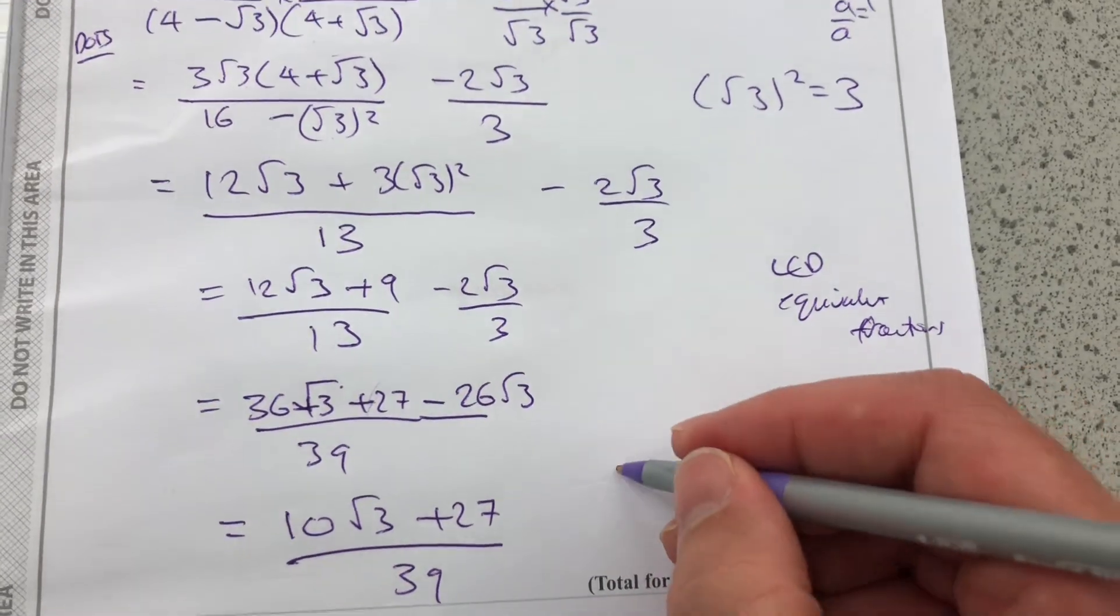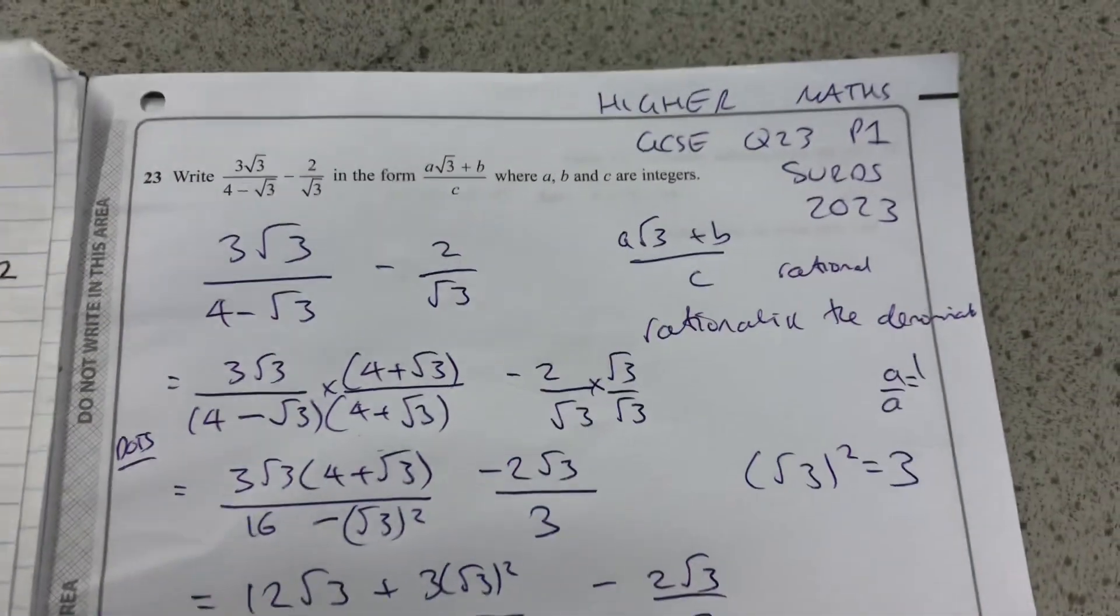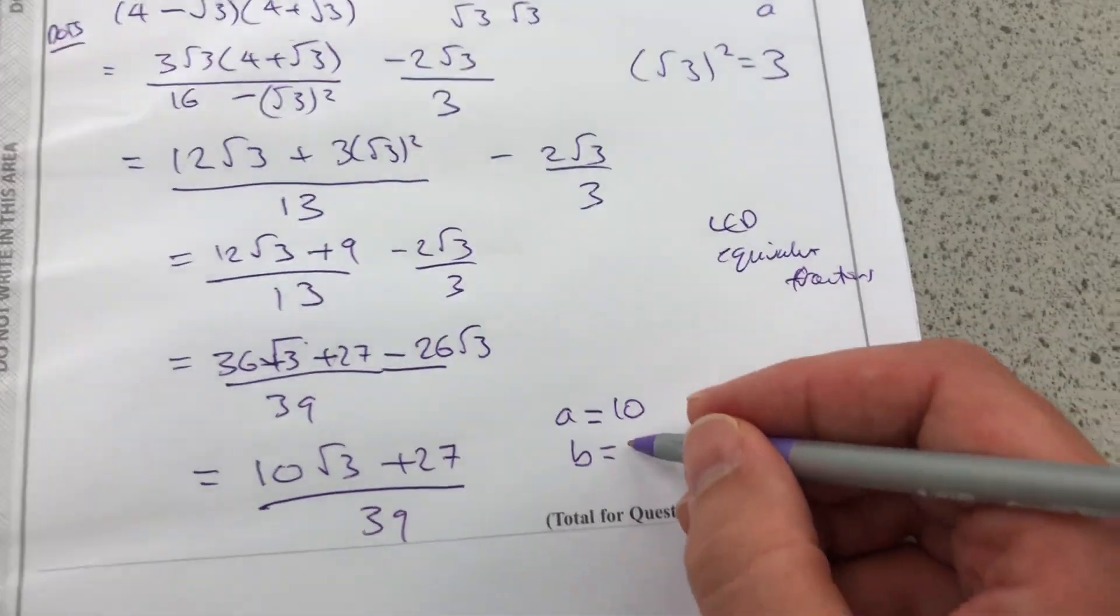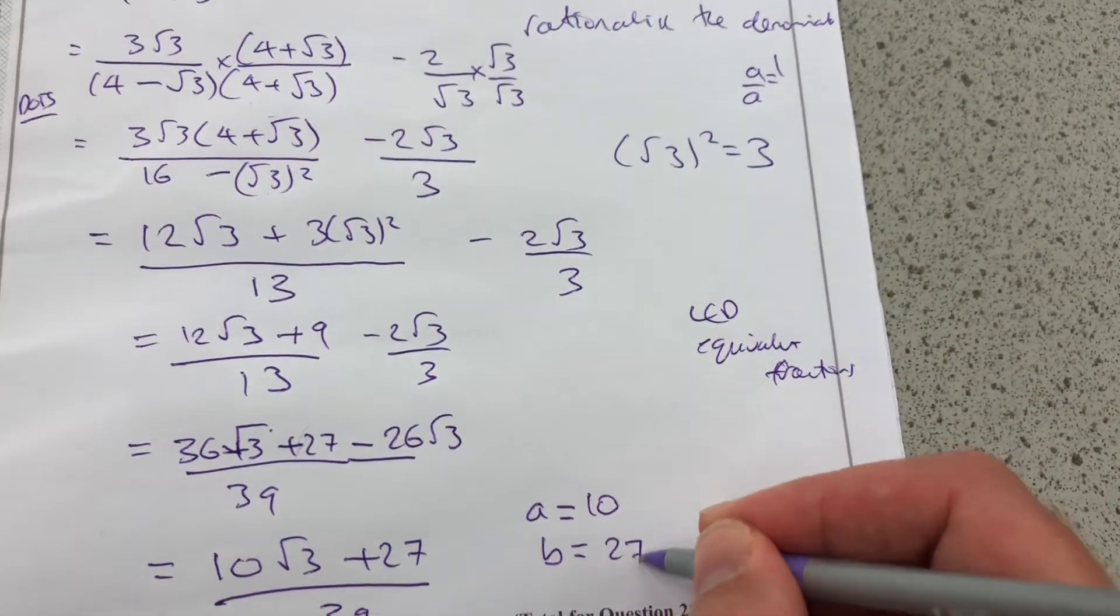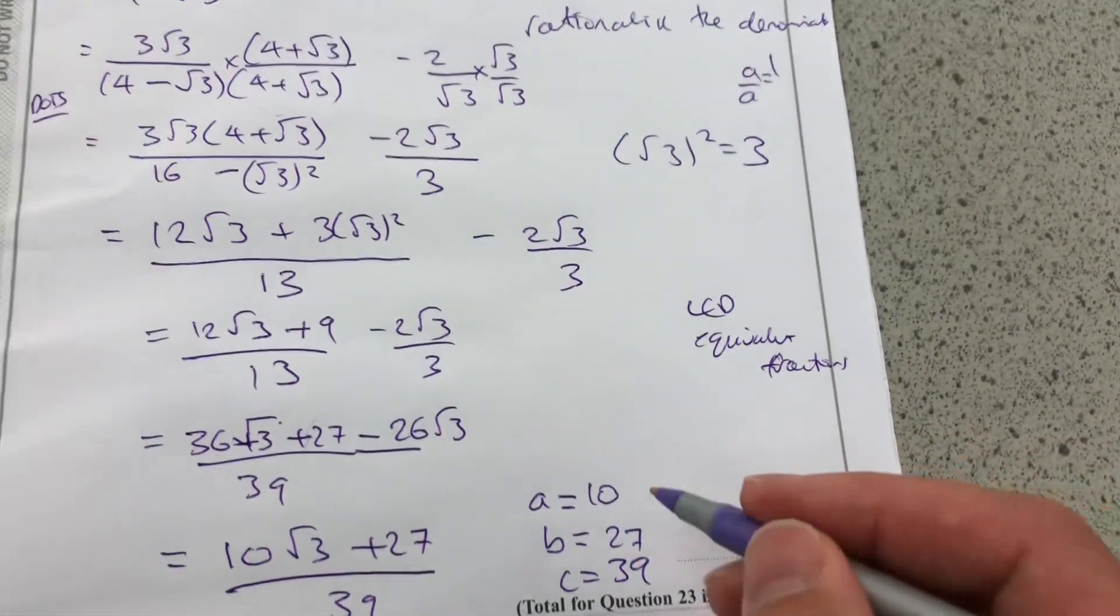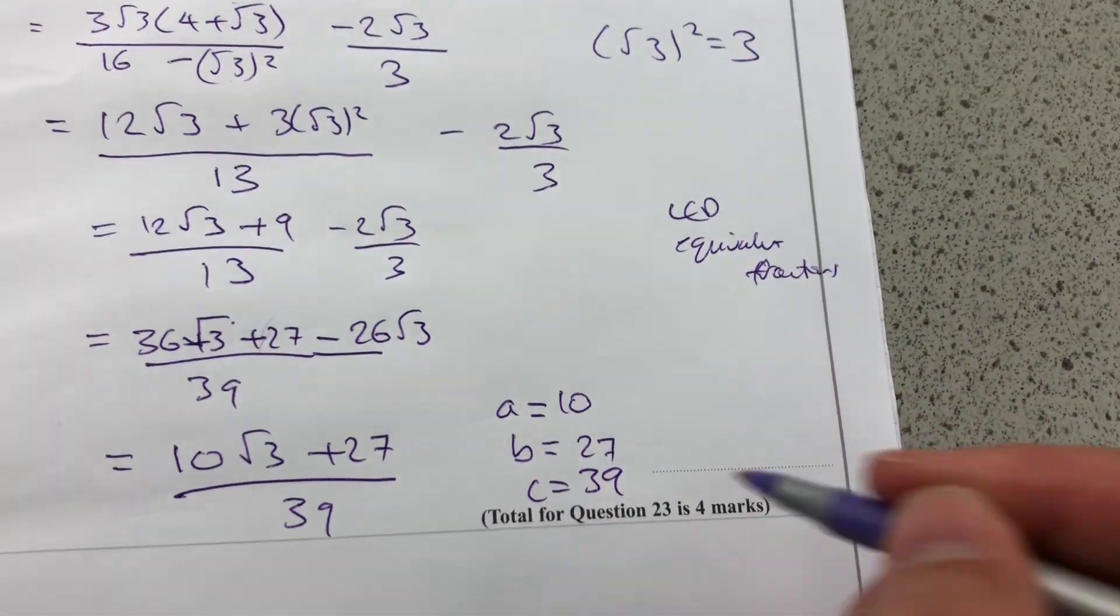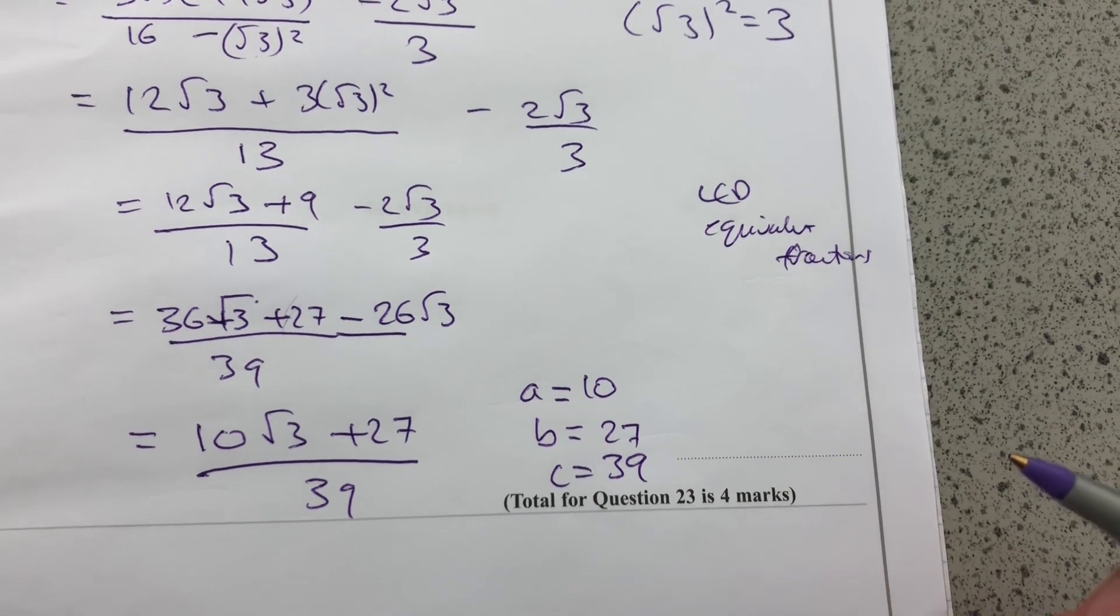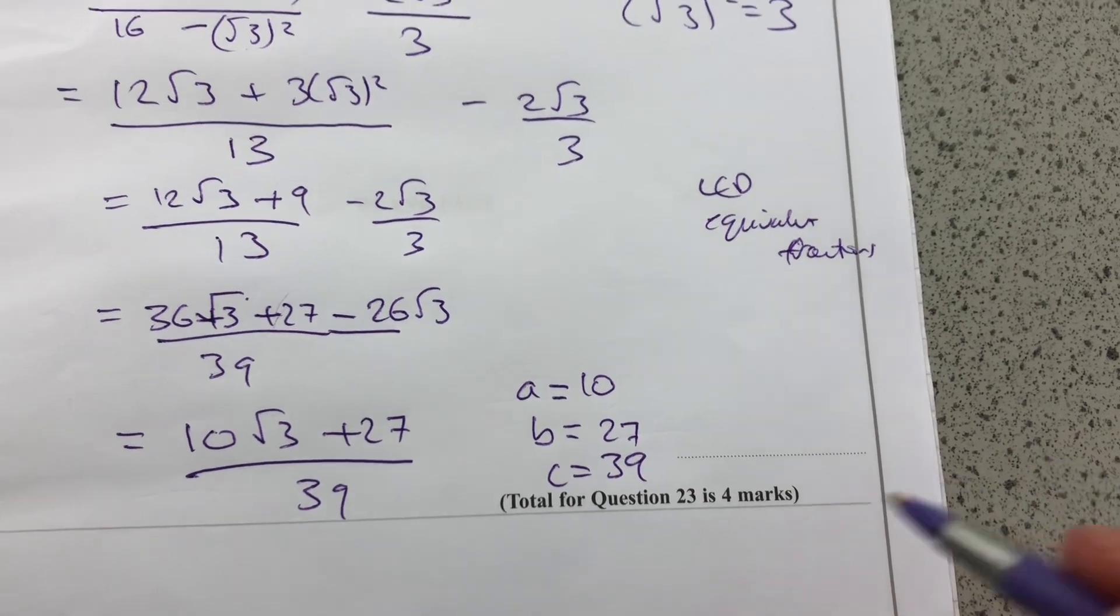Where I now have an A, which is wanted to be 10. A B to be 27. And a C to be 39. All of which are rational integers, as expected in the question. So 10 root 3 plus 27 all over 39.